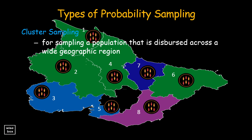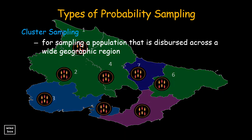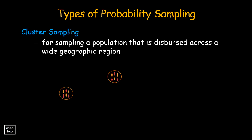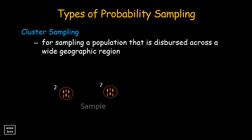To do cluster random sampling, we obtain a list of all regions in the state, then random sample the regions from the list. For example, if region 2 and 7 were randomly selected, we must obtain a list of people from region 2 and 7, then contact each of those in the list since they are the members of the sample.